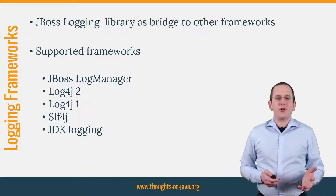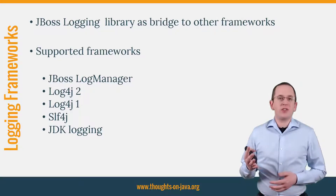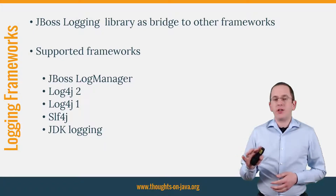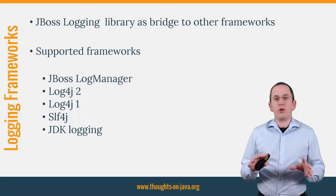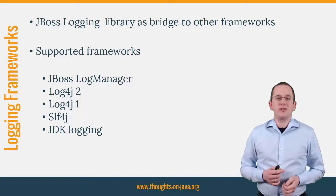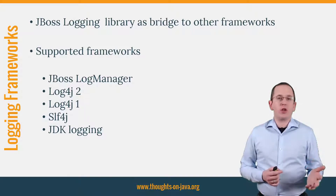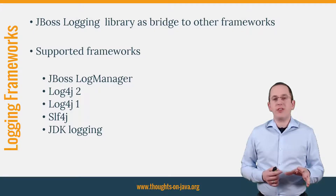Before we talk about the different logging settings, let's have a quick look at the logging frameworks supported by Hibernate. Since version 4.0, Hibernate uses the JBoss Logging Library to write messages to a log file. This library is a logging bridge that integrates different frameworks. You can decide which of the frameworks shown here on the slide you want to use for your application. You just need to add your preferred framework to your classpath and the JBoss Logging Library will pick it up. If there are multiple frameworks available, the one with the highest priority will be chosen. I prefer Log4J and will use it for the examples in this video.